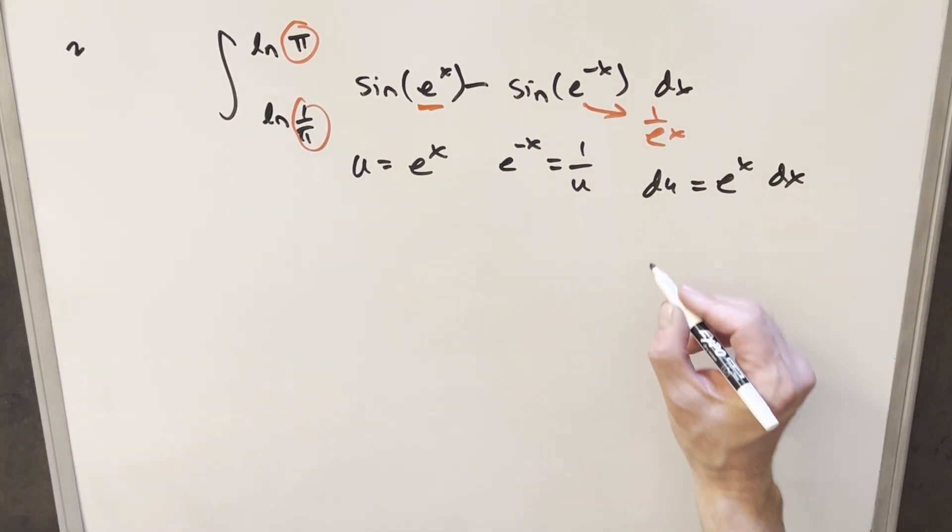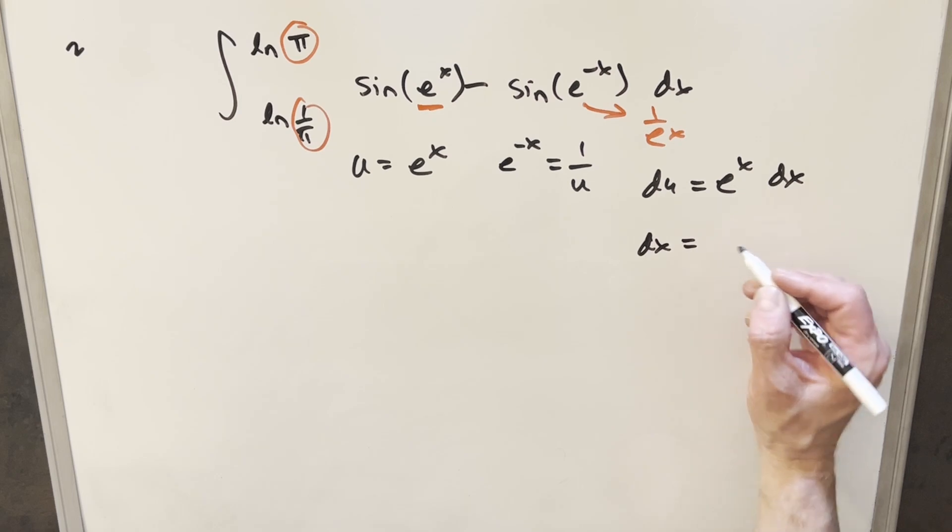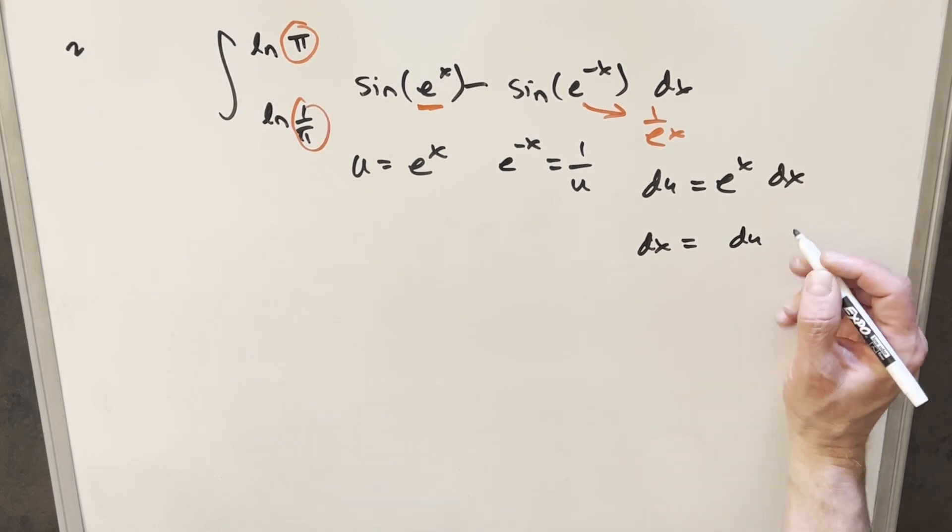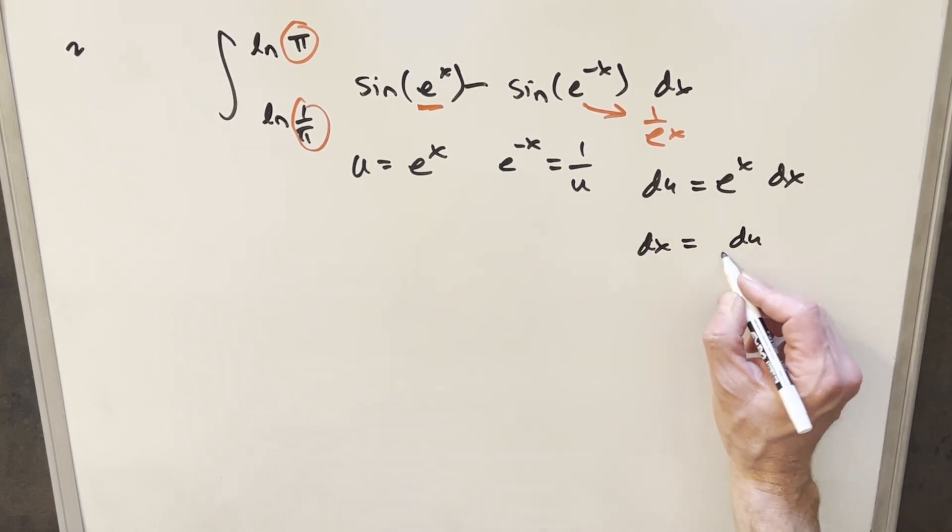I could have taken a natural log here, but it doesn't really matter. I can just rearrange this and solve for dx, and we'll get du over e to the x. But e to the x is just u. So we can have this as our value for dx.